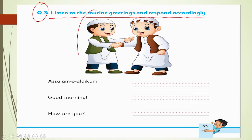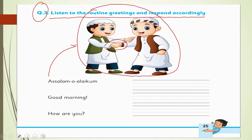Is tasveer mein aap dekhein — do bachche aapas mein haath mila rahe hain, matlab woh mulaqat kar rahe hain. Pehla response: As-salamu alaykum. Hum musalman hain bachcho, to hamara jawaab kya hona chahiye? Wa alaykum assalam.